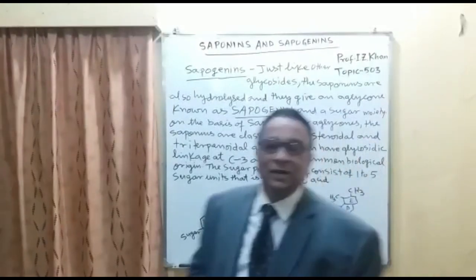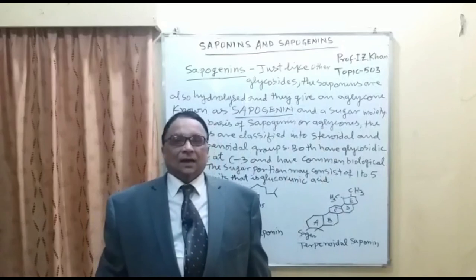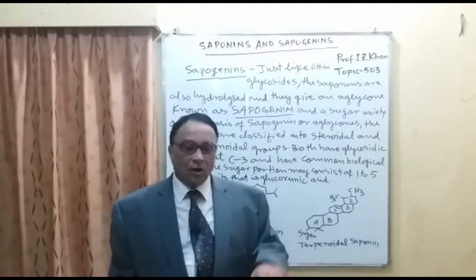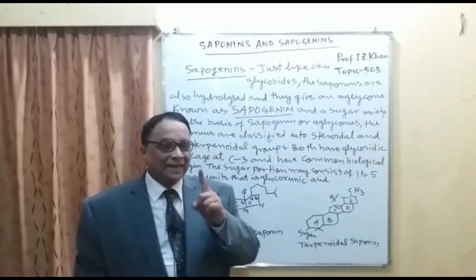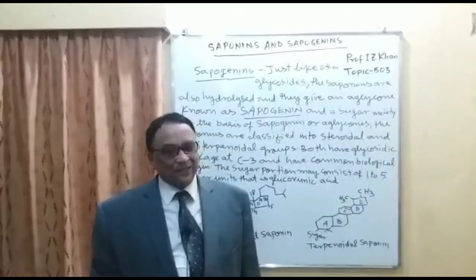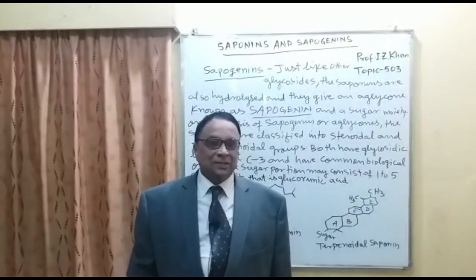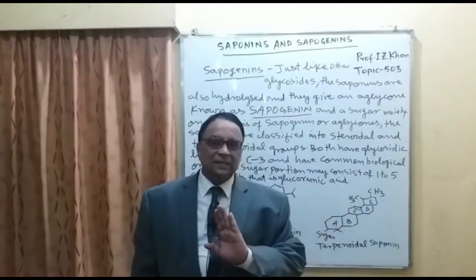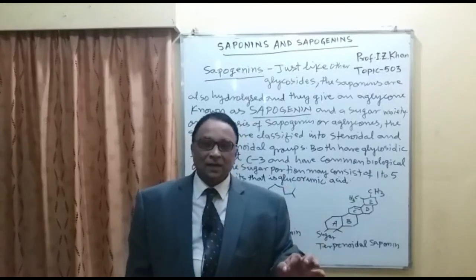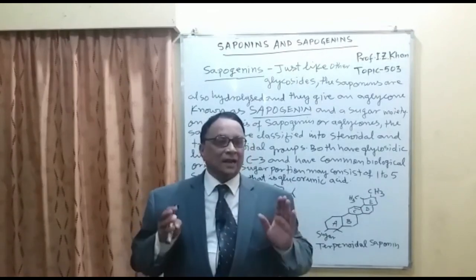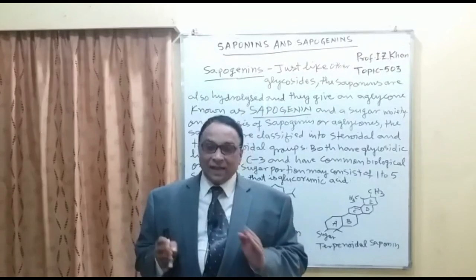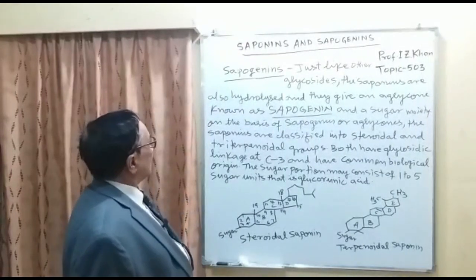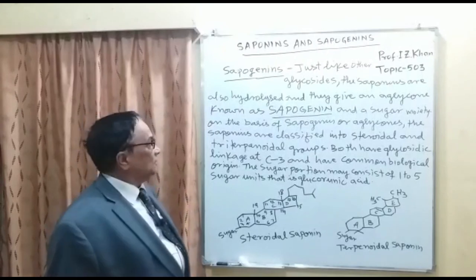Sapogenin is the aglycone that remains after the glycoside is hydrolyzed in the presence of acid or enzyme — whether it is a terpenoidal nucleus or a steroidal nucleus, it is called sapogenin. Most students, even at master's level doing MSc or M.Pharm, make the mistake of writing 'saponins glycosides.' Saponin is self-explanatory as a glycoside; once hydrolyzed, it is called sapogenin.